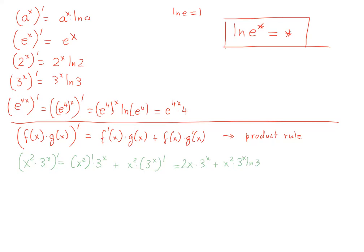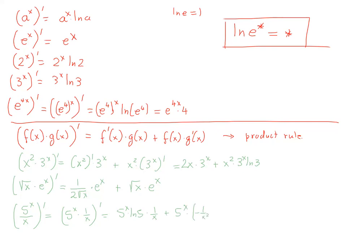How about the derivative of square root of x times e to the x? It will be the derivative of square root of x, which is one over two square root of x, times e to the x, plus square root of x times the derivative of e to the x, which is e to the x. For the derivative of 5 to the x over x, think of it as 5 to the x times one over x. The derivative is 5 to the x times ln 5 times one over x, plus 5 to the x times negative one over x squared.